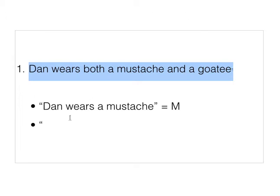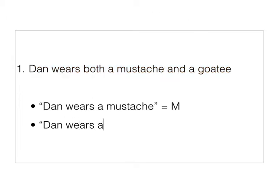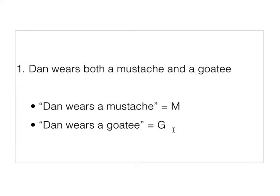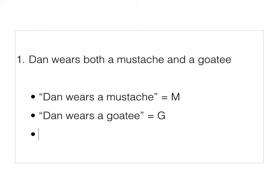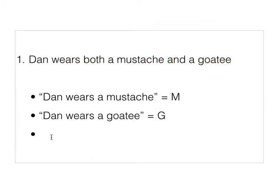The other sentence is 'Dan wears a goatee,' and we're going to call that G. So, given these two atomic sentences — Dan wears a mustache and Dan wears a goatee — that we're calling M and G respectively, the way we would translate 'Dan wears both a mustache and a goatee' would be like this: M for Dan wears a mustache, the ampersand to represent the conjunction, and then G, which stands for Dan wears a goatee.